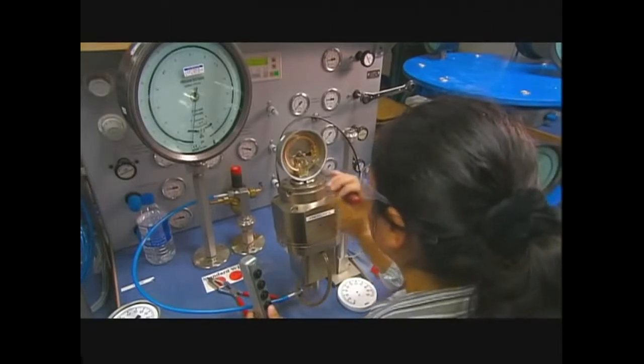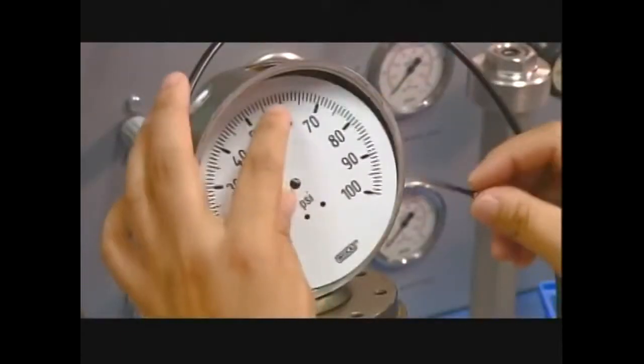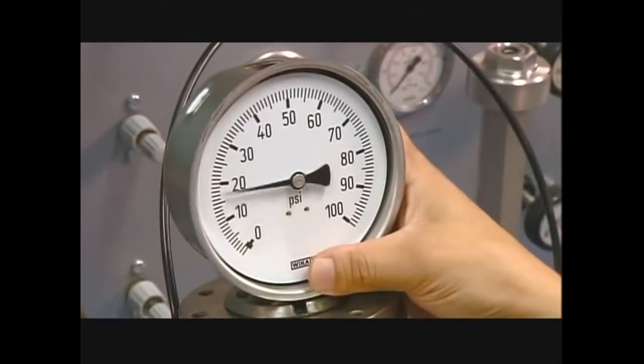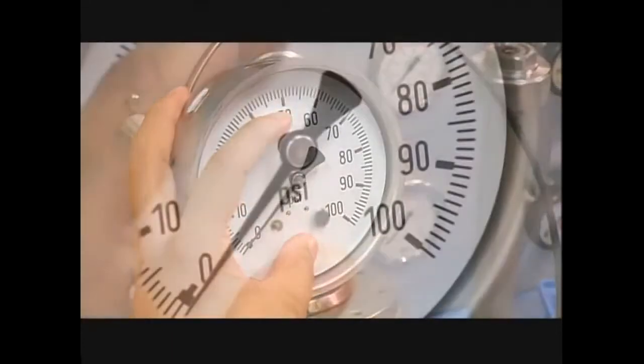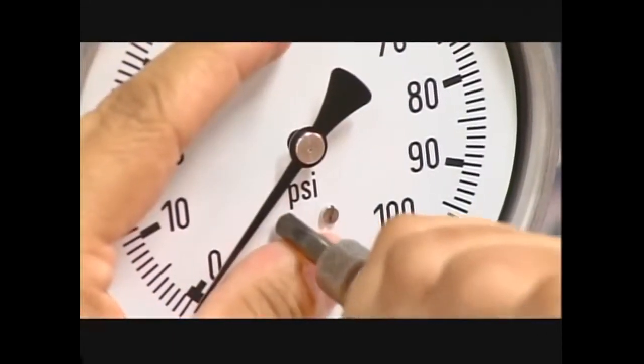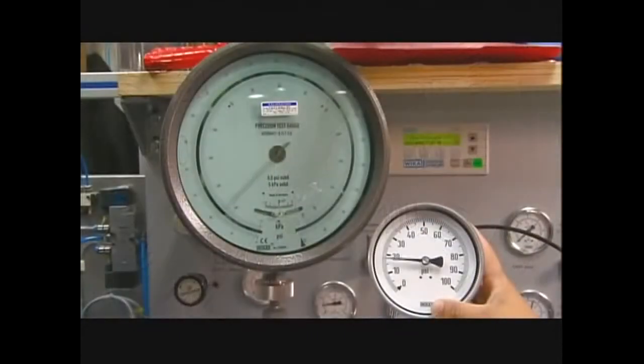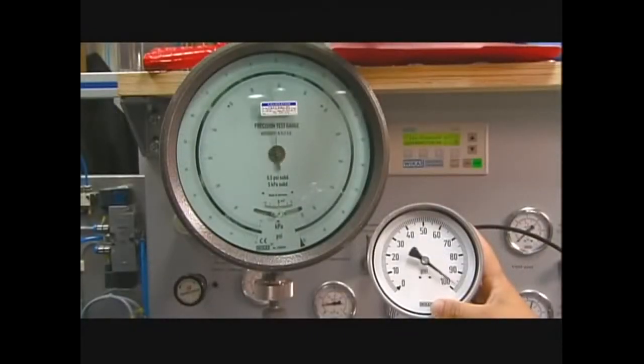After a bit more adjusting, she puts the faceplate and the indicator needle back on. She ensures the gauge reads accurately at three key positions, and then screws the faceplate onto the gauge. A final test confirms it is calibrated properly.